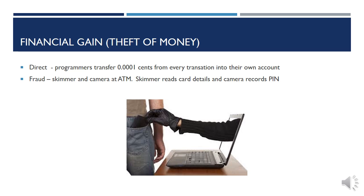Fraud can also be performed at an ATM. Criminals put a skimmer into the card reader which reads all the card details, or they put a camera that records your PIN as you type it in. That's why you always need to be very careful at ATM machines.